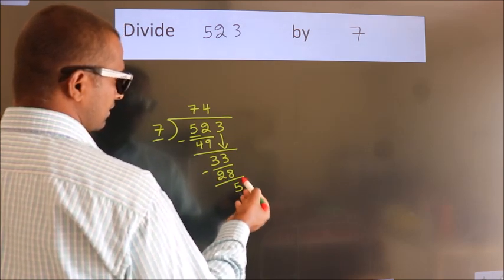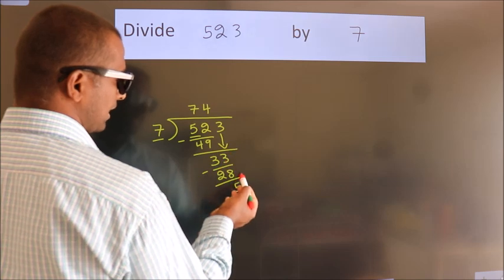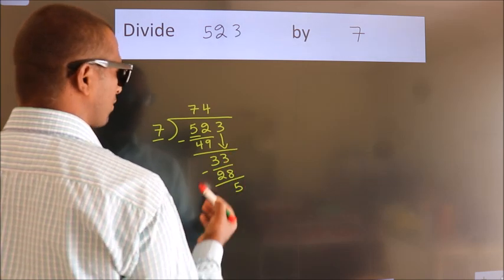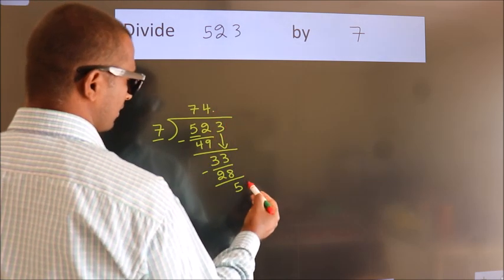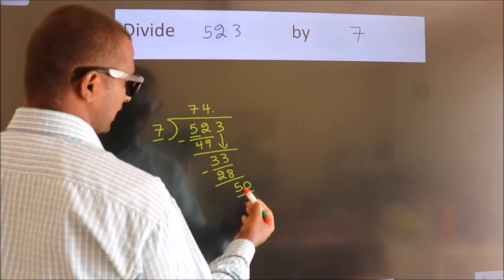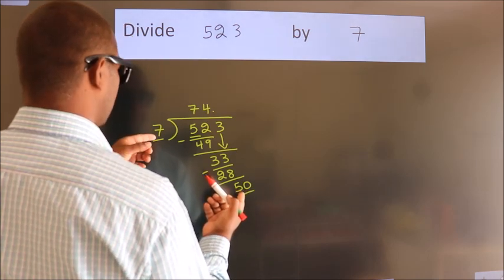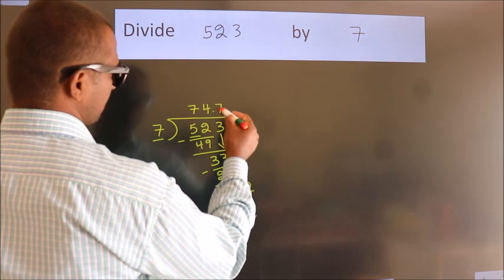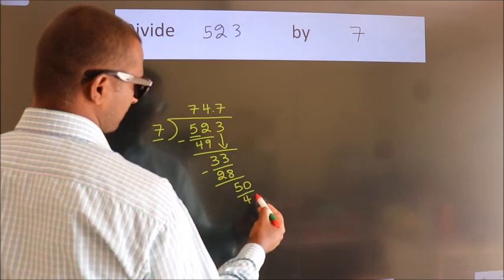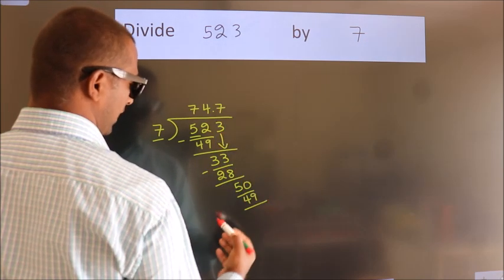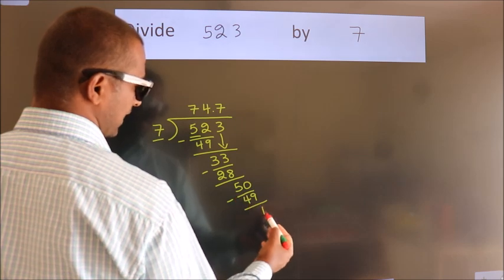After this, there are no more numbers to bring down. So, what we do is put a dot and take 0, making 50. A number close to 50 in the 7 table is 7 times 7 equals 49. Now, we subtract. We get 1.